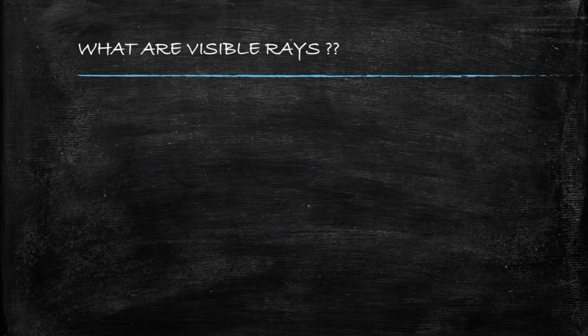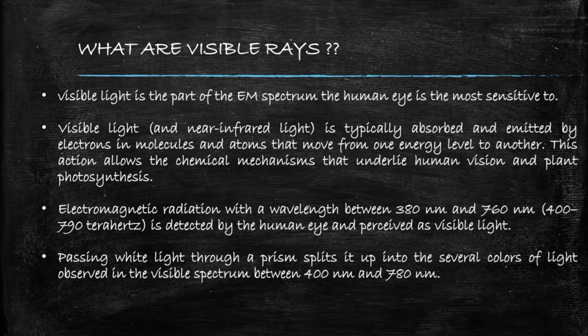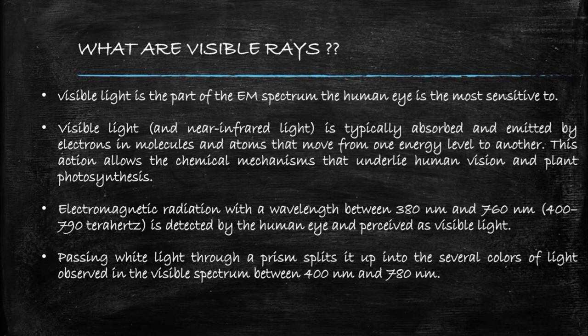Now let's see about visible rays. The best example is a rainbow that we see with the naked eye. How is it possible? Visible light is typically absorbed and emitted by electrons in molecules and atoms that move from one energy level to another energy level. This action allows the chemical mechanisms that underlie human vision and plant photosynthesis. The radiation between 400 terahertz to 790 terahertz can be detected by the human eye, and hence it is perceived as visible light.